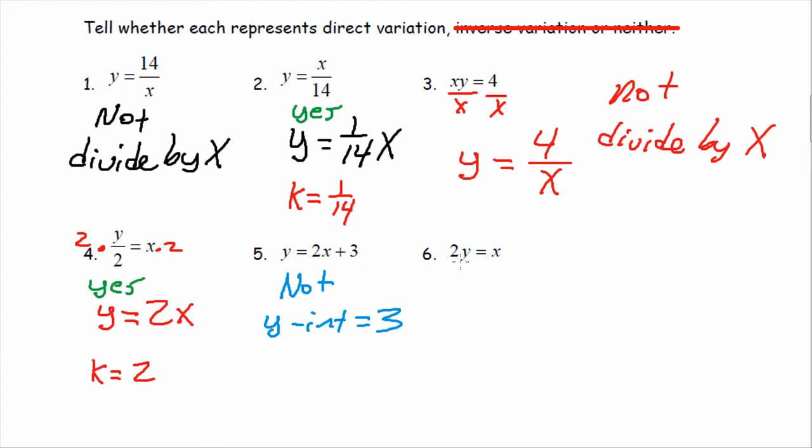The last one, 2y equals x. As always, I need to get y by itself. So, I divide by two, and I get y equals x over two. We also can write that as y equals one-half x. That is a yes. The y-intercept is zero, and x is being multiplied by, and my k value is one-half.